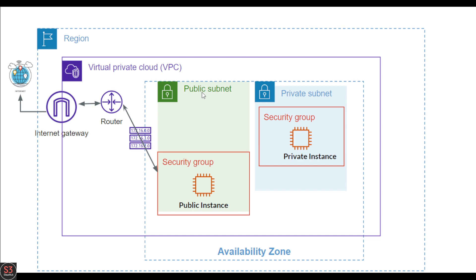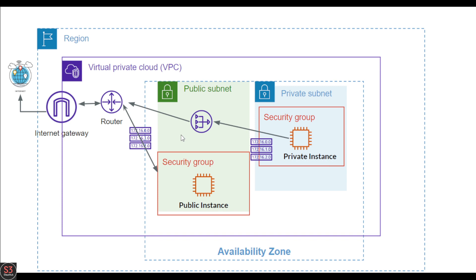Now we are going to see how to connect our private instance to the internet using the NAT gateway. NAT instance and NAT gateway both perform the same things, but NAT gateway is more simpler and easier. We have a private subnet with a security group and a private instance. We will create a NAT gateway, connect it to the router, and the router connects to the internet gateway, providing internet access to the private instance.